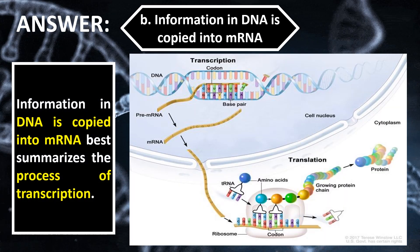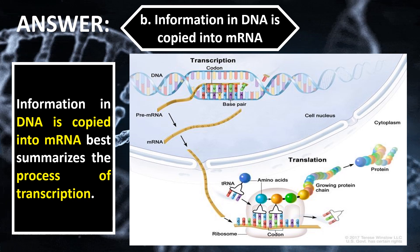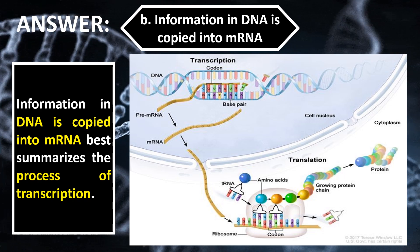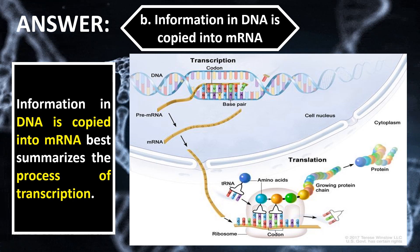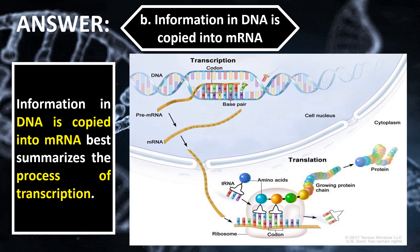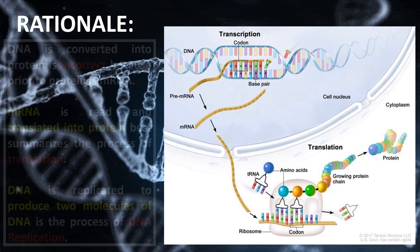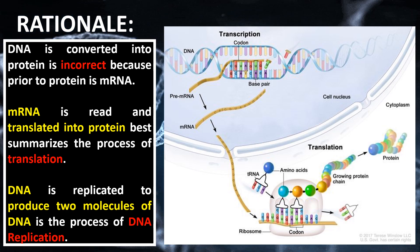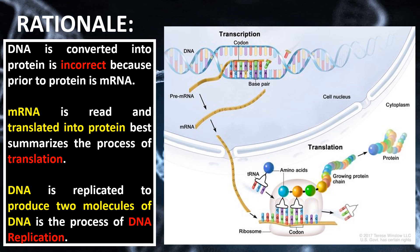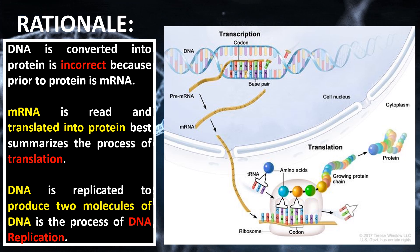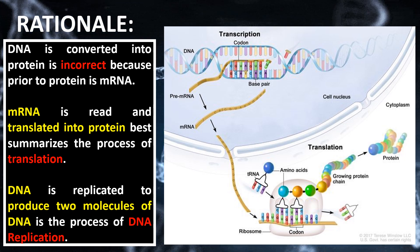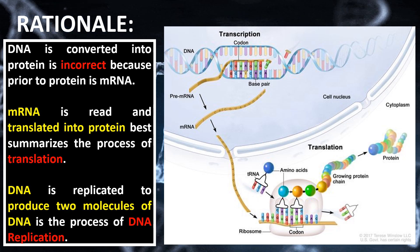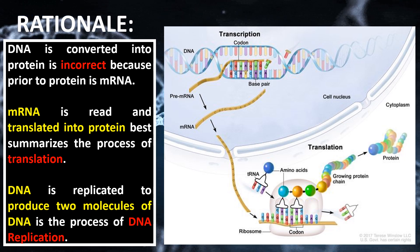The correct answer is letter B: information in DNA is copied into mRNA, which best summarizes the process of transcription. Option A is incorrect because prior to protein there is mRNA. Option C — mRNA is read and translated into protein — best summarizes the process of translation. Option D — DNA is replicated to produce two molecules of DNA — describes the process of DNA replication.